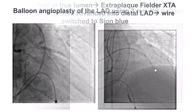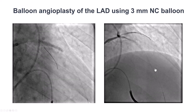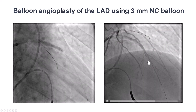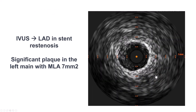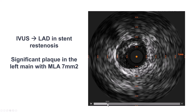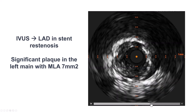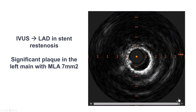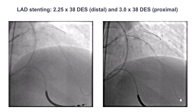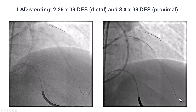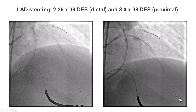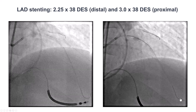We switched the guide wire to a workhorse guide wire and then performed balloon angioplasty on the LAD. There is still some poor flow distally, so we performed IVUS again to check the vessel. There is some diffuse disease, and there was a lot of plaque into the left main. The left main actually appeared to be significant. The MLA was 7 mm squared, which was something we did not fully appreciate when we started the case. So we do have, in addition to the LAD CTO, some left main disease. But the patient did remain very stable throughout all these crossing attempts.